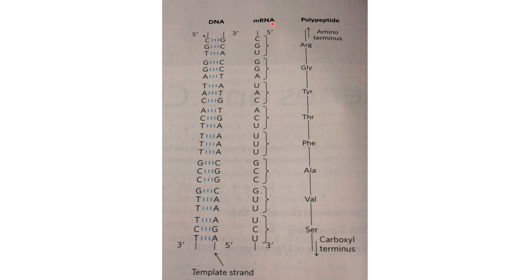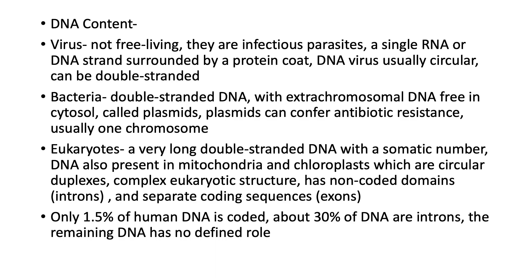The transformation from messenger RNA template to a polypeptide strand is called translation. The 5' prime amino terminus begins the process at this end. These three nucleotides in sequence code for a specific amino acid. CGU codes for arginine, GGA for glycine, UAC for tyrosine, and so on, all the way down to the carboxyl terminus.